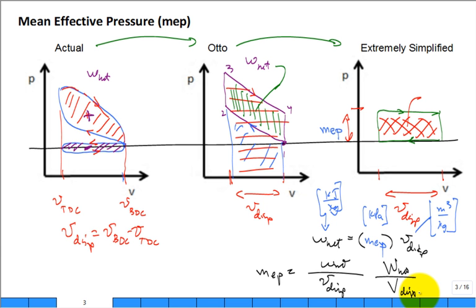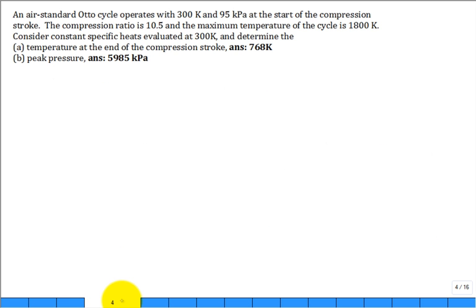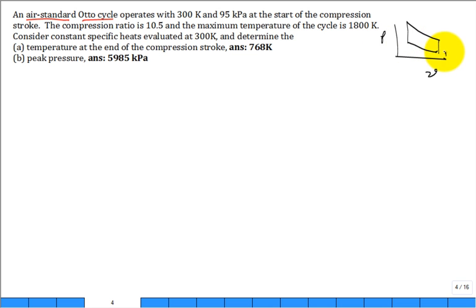Let's solve a problem. We have an air standard Otto cycle. As soon as you see 'air standard,' that means: air only, no exhaust and intake, heat transfer replaces combustion, and heat transfer replaces the exhaust and intake strokes. It's an Otto cycle so heat addition is at constant volume. You can sketch both the pressure-volume diagram and temperature-entropy diagram: states one, two, three, four.